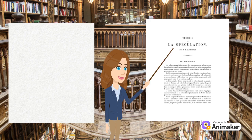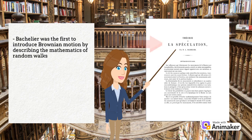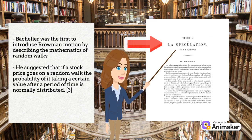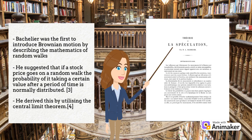Contradictory to common belief, Einstein was not the first to introduce Brownian motion in his 1905 paper. Instead it was Bachelier, in describing the mathematics of random walks, as he wanted to liken this to the random movement of stock prices. He suggested that if a stock price goes on a random walk, the probability of it taking a certain value after a period of time is normally distributed. He derived this by utilizing the central limit theorem.